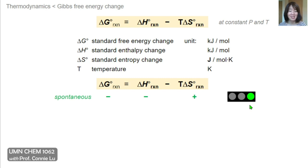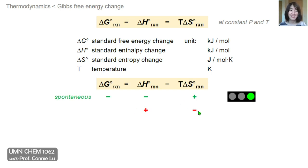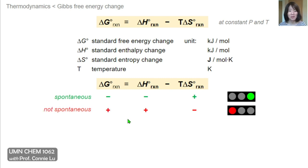In the next scenario — the polar opposite — both the enthalpy change and the entropy change are unfavorable: delta H is endothermic or positive, and the entropy change is negative. We have a positive number subtracting a negative number, so these two negatives form another positive value. Delta G of this reaction will always be positive, indicating the reaction as written is not spontaneous, represented here by a red traffic light.